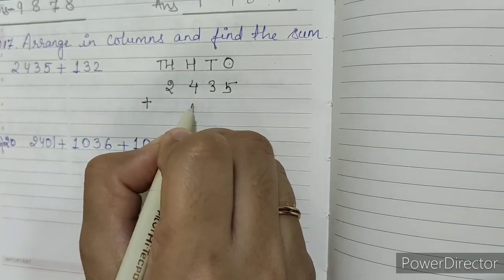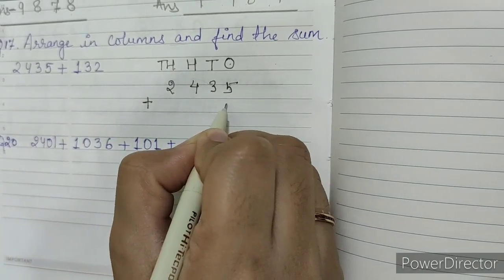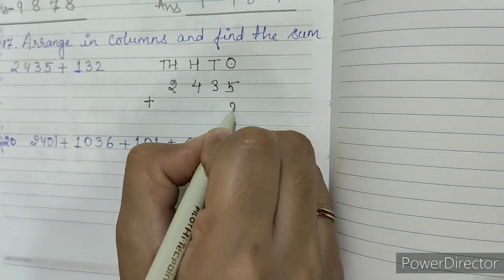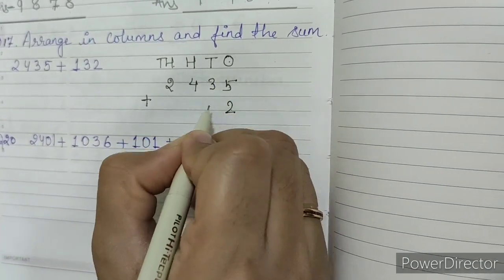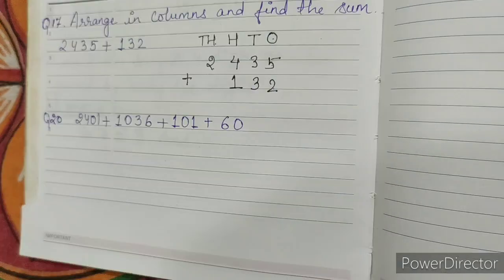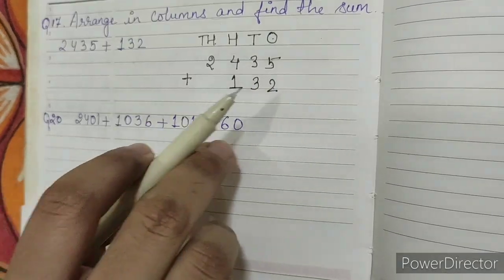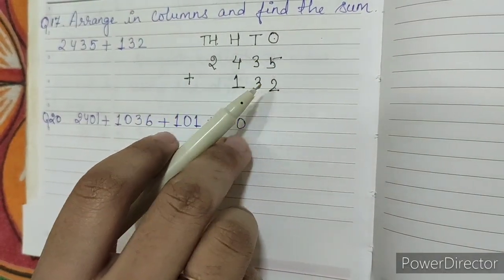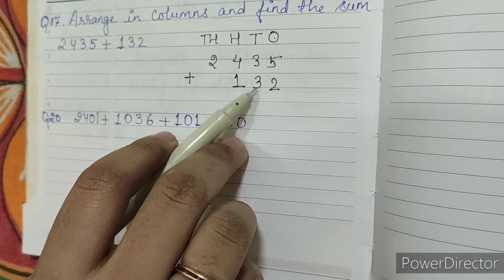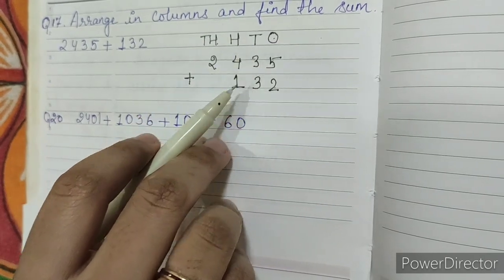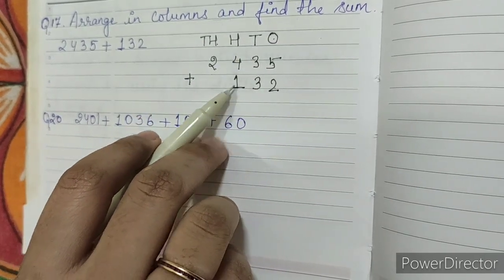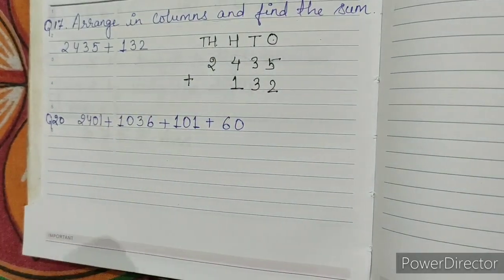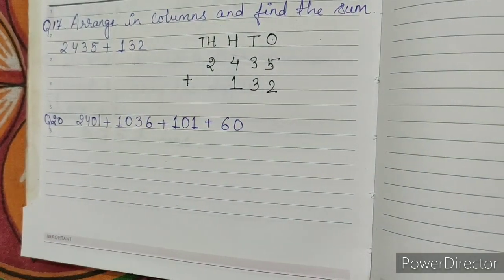Then 132: two is at ones place, three is at tens place, and one is at hundreds place. Now in this question we have to perform the addition.